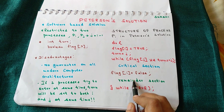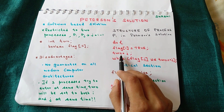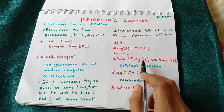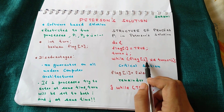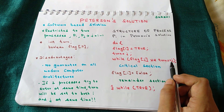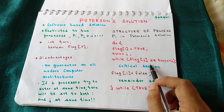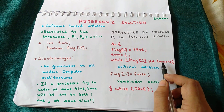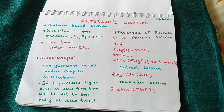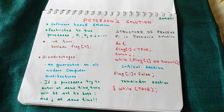To summarize the general structure: whenever process Pi wants to enter the critical section, it sets `flag[i]` to true and sets `turn` to j. Then it runs a while loop checking whether `flag[j]` is true and `turn == j`. This ensures that when Pi wants to enter the critical section, no other process is already executing in it. This is the general structure of process Pi in Peterson's solution.